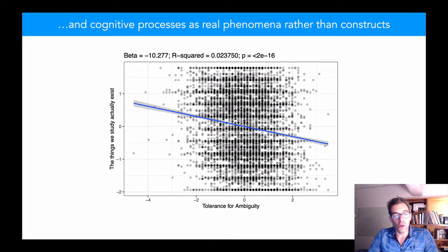Those who have a greater tolerance for ambiguity also are less likely to think of cognitive processes as real phenomena rather than constructs.